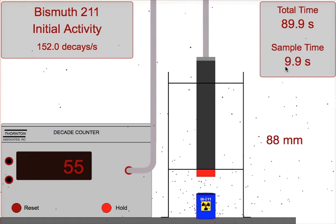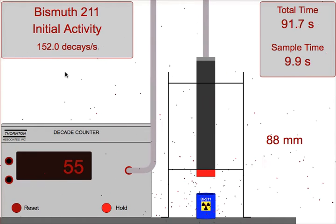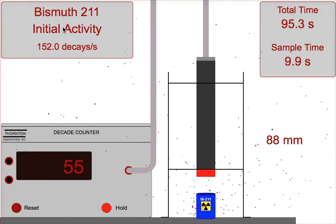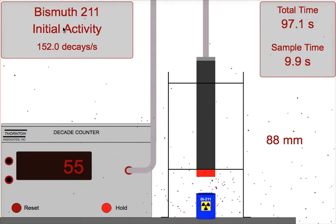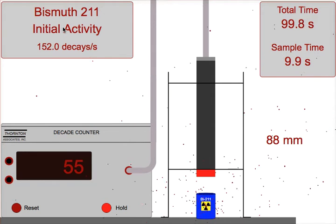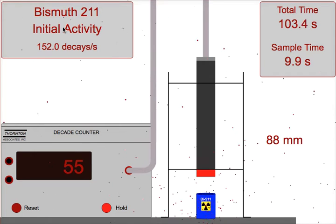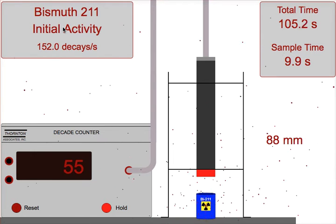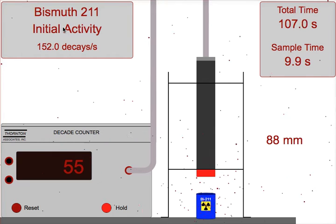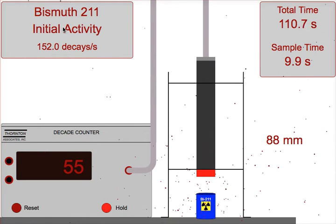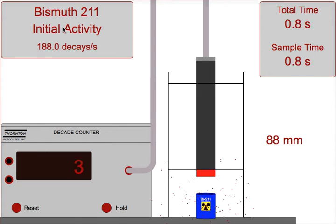If the students mess up and need to restart the experiment, they can click on this box, which will bring us back to time zero. It will also change the activity of the sample. They want to make sure that they start collecting their data fresh. They should not mix data with two different samples. We get a fresh sample of bismuth when we click on that.